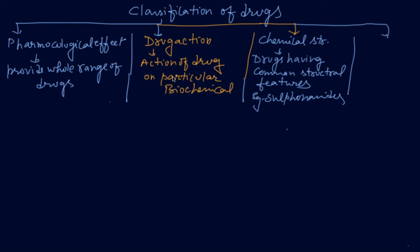My dear students, the classification of drugs has four types. Number one is pharmacological effect. This provides the whole range of drugs available for treatment of a particular disease, such as antipyretic for temperature, analgesic for pain - all range of drugs is available.